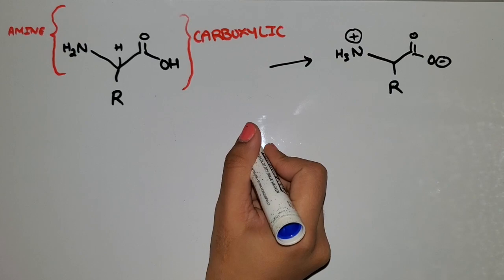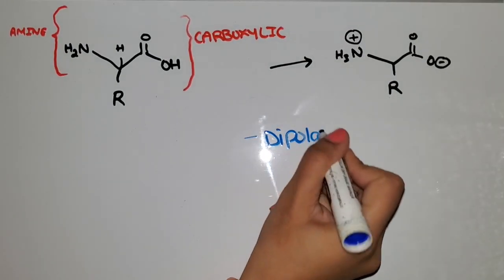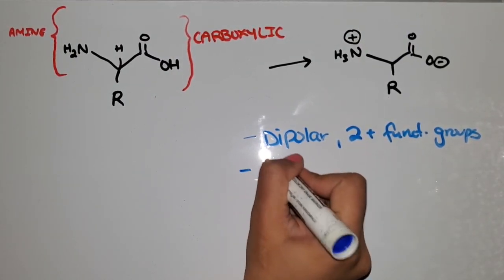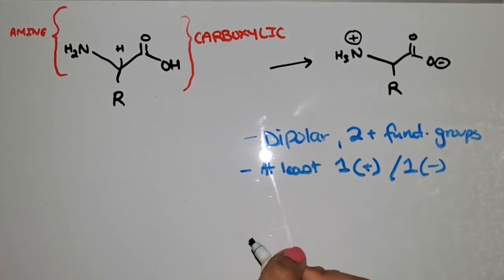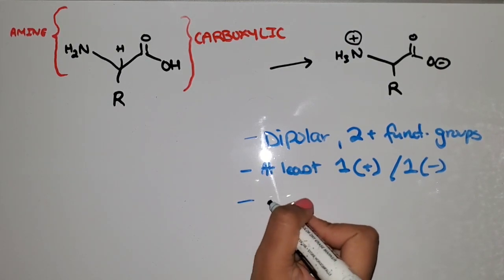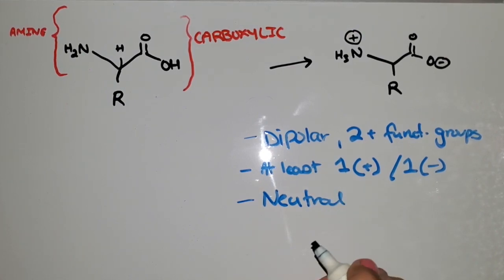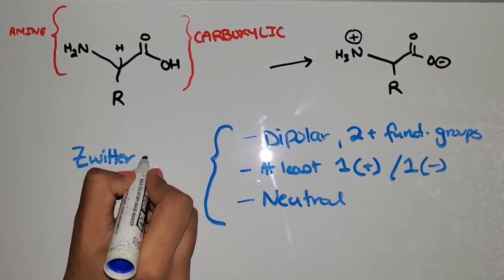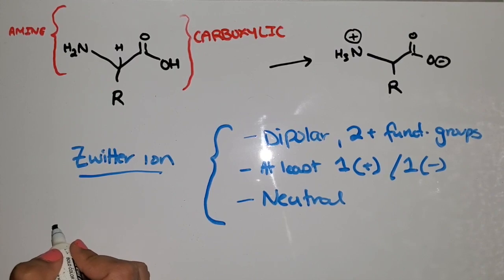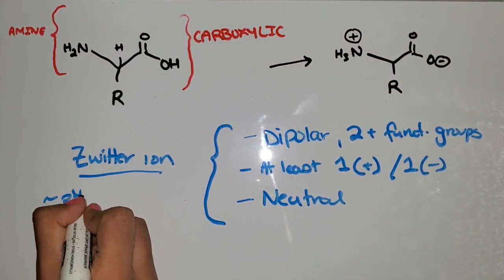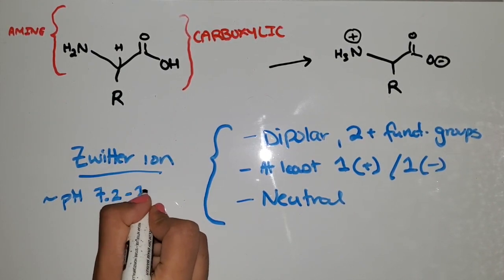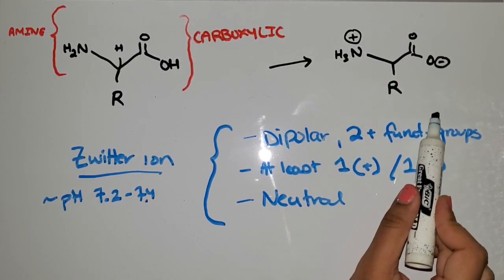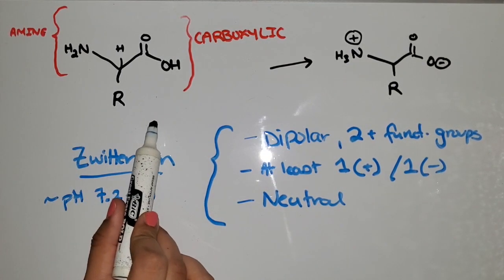I want you to bring your attention to the fact that this molecule is dipolar — it has two or more functional groups, at least one positive and one negative. And even though it's charged, the overall total charge is actually neutral. And because it's all of these things, it is called a zwitterion. This zwitterion is actually seen at physiological pH, which is around 7.2 to 7.4. So in our body, this is how amino acids exist, but in our textbooks, that's how they're usually shown.